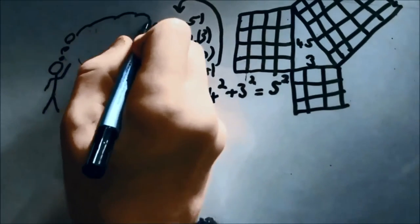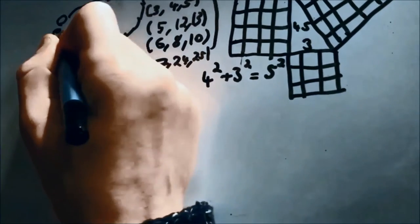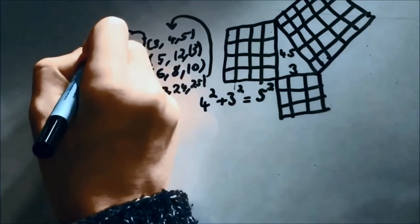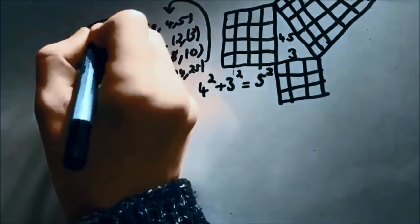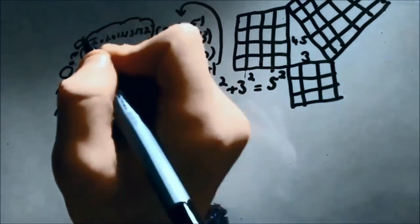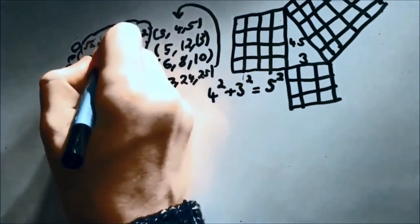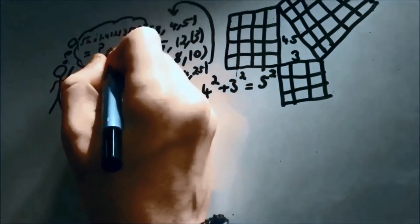Pythagoras started the foundations of number theory with his interest in prime and perfect numbers. When Pythagoras' student Hippasus tried to calculate the value of the square root of two, he found that it was not possible to express it as a fraction, thereby indicating the existence of irrational numbers.